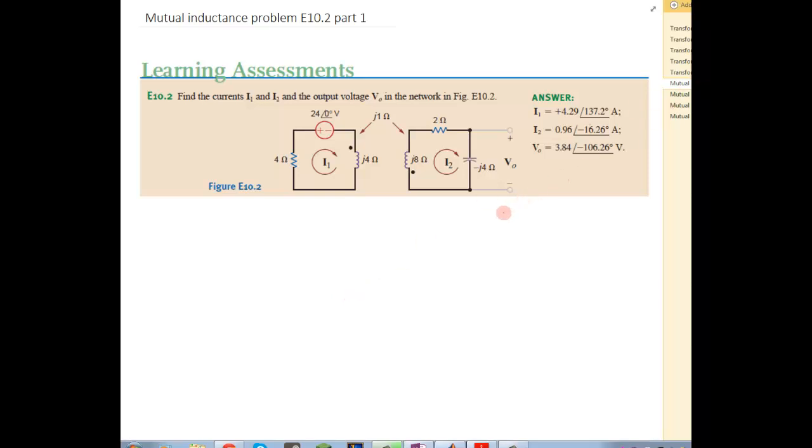Alright, the blending assessment E10.2 using mutual inductance. Find the currents I1, I2, and V0 in the network.